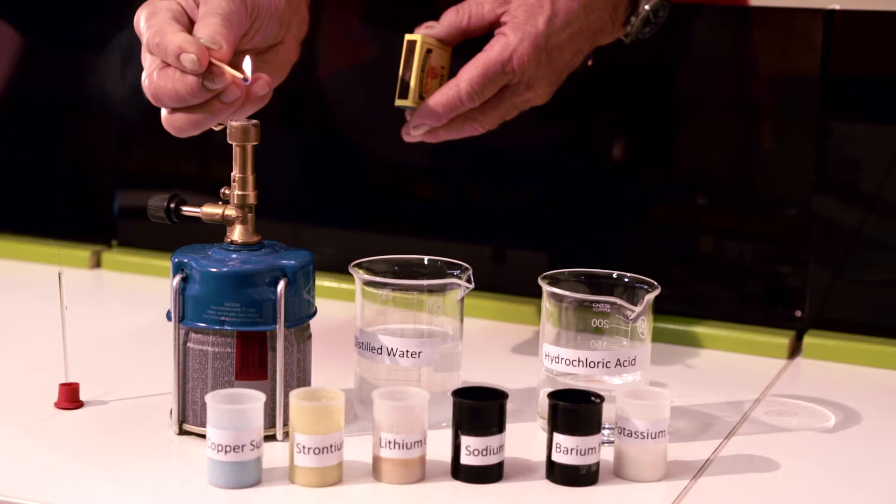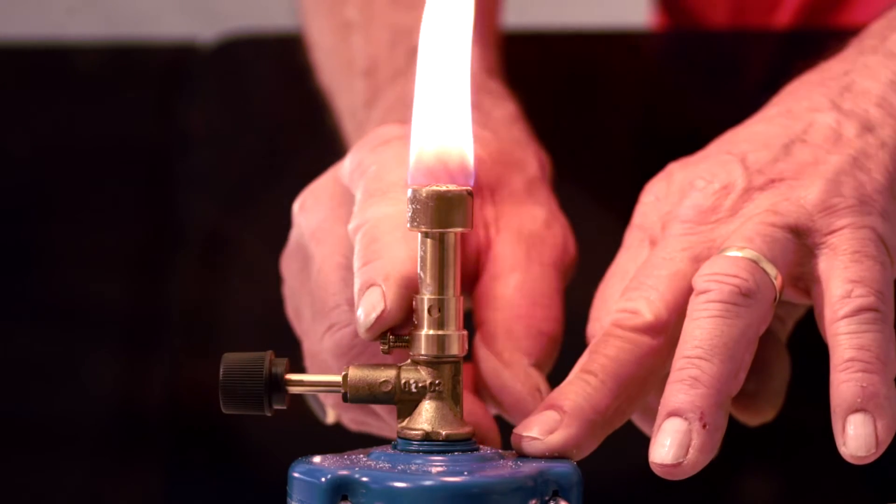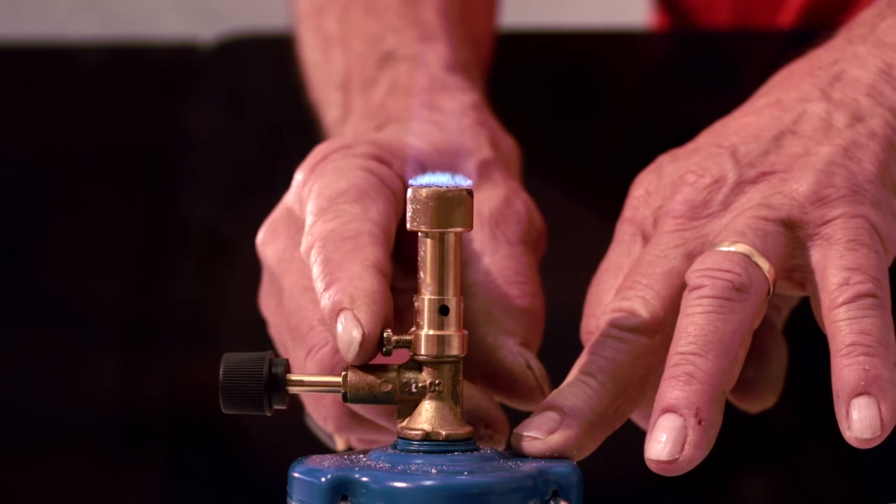Method 1: Light the burner and adjust the air vent until the flame is as close to colorless or blue.